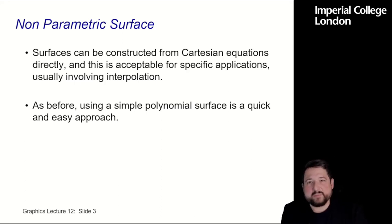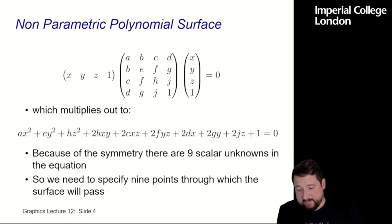So we can first ask the question, is there a non-parametric surface representation for this? And surfaces can be constructed directly from Cartesian equations, like we did for the splines. And this is acceptable for very specific applications, usually involving some sort of interpolation. So for example, a terrain map can be just encoded as x, y, and z coordinates with some sort of polynomial on top, if you want, as interpolation. So as before, using a simple polynomial surface is a quick and easy approach here.